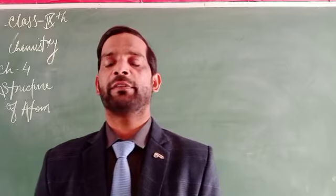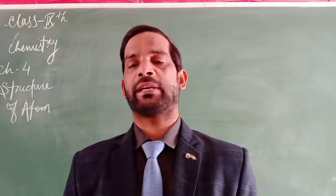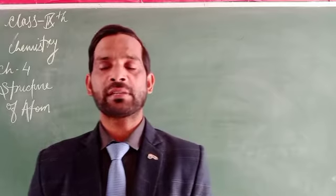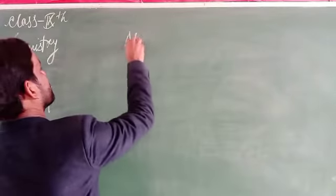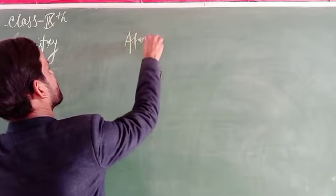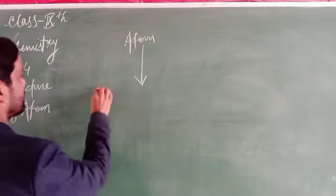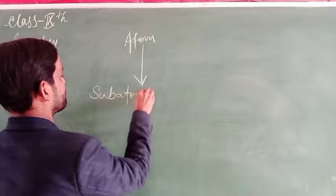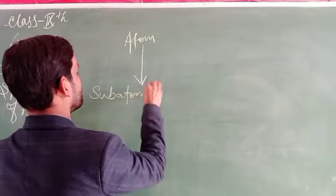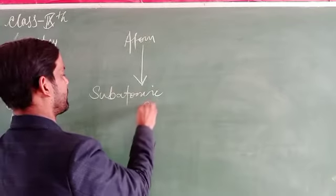The atom can be made further by other sub-units. What are these sub-units called? They are called sub-atomic particles. If there are atoms, the atom can further be formed into sub-atomic particles.